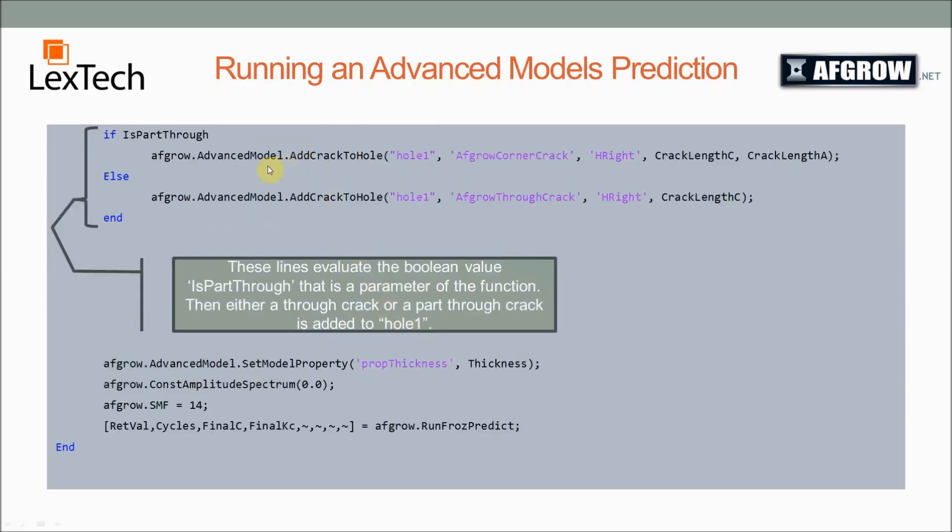In this if-else statement, we're checking to see if the boolean we passed as a parameter called isPartThrough is true or false, and if it's true, then we add an AFGRO corner crack to the solution at the hole, and if it's false, we add an AFGRO through crack to the solution. We're going to be adding these to the right side and passing the parameters of the crack length. And then down here, we set the advanced model's property thickness parameter.